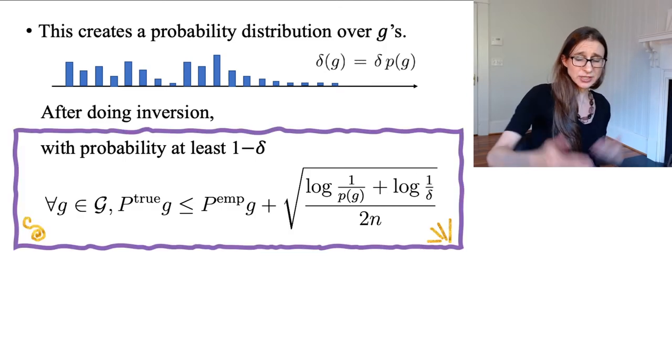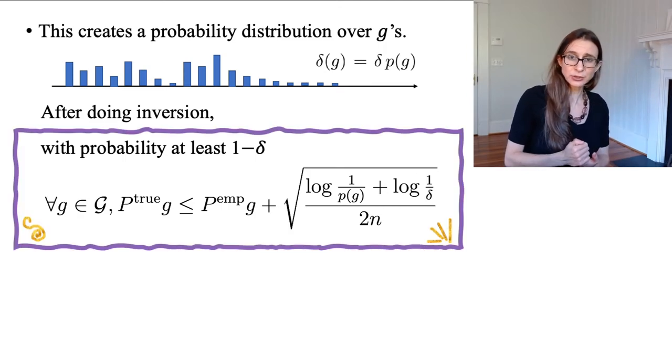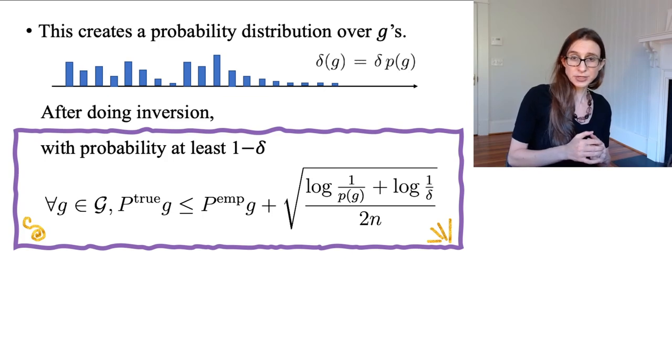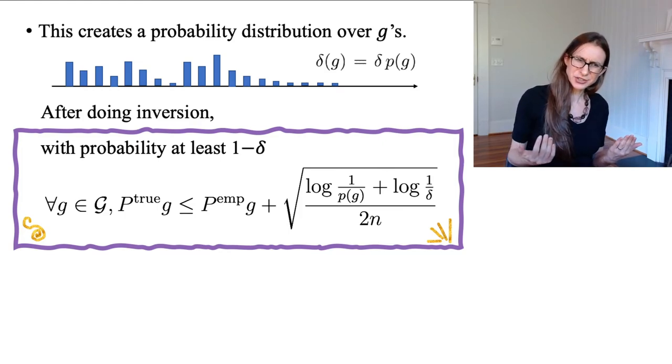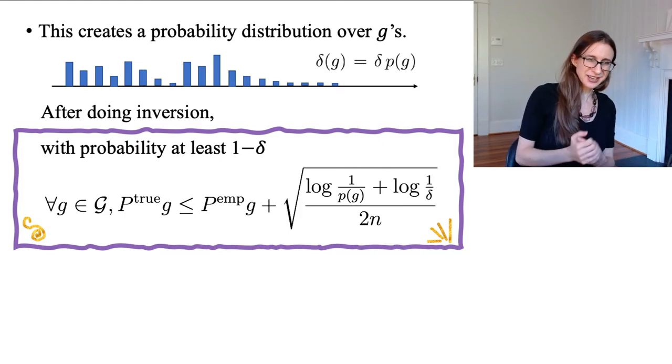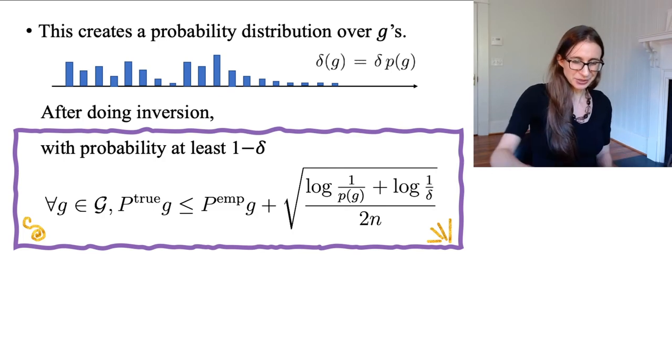This actually is our bound. This is actually our new version of the Occam's Razor bound that applies to the countably infinite case. And it's kind of funky because it depends on a strange probability distribution that you get to choose in advance, but at least it applies to the countably infinite case.